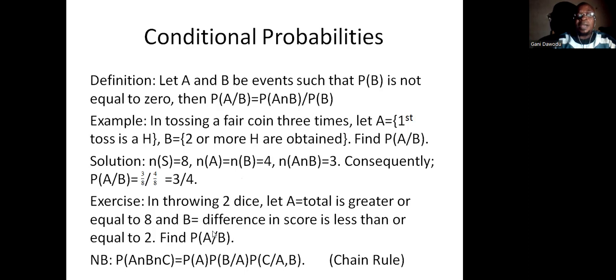And it will be two thirds. An exercise is here for you. You do it at your leisure. Now the chain rule applies here. Probability of A intersection B intersection C equals probability of A times probability of B given that A has occurred, times probability of C given that both A and B have occurred. The chain rule applies to compound cases.